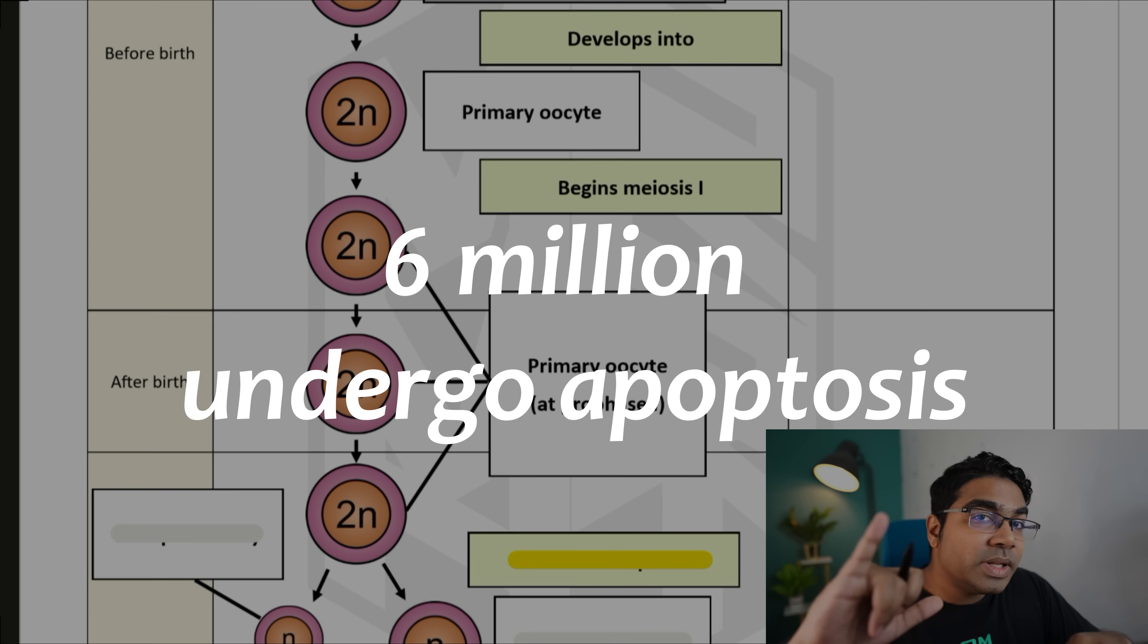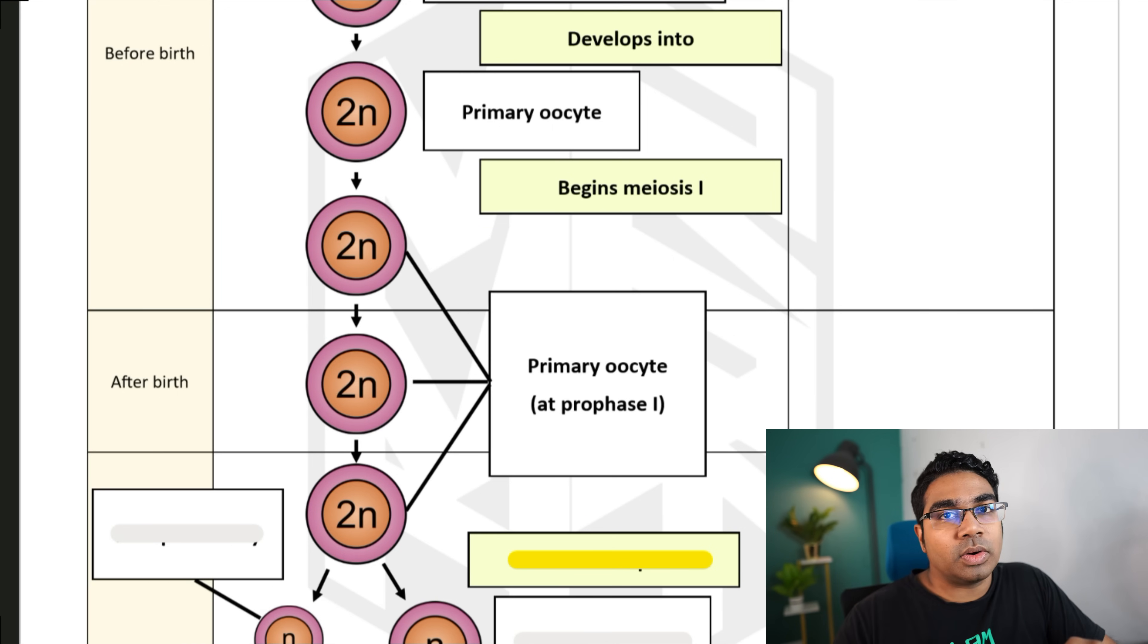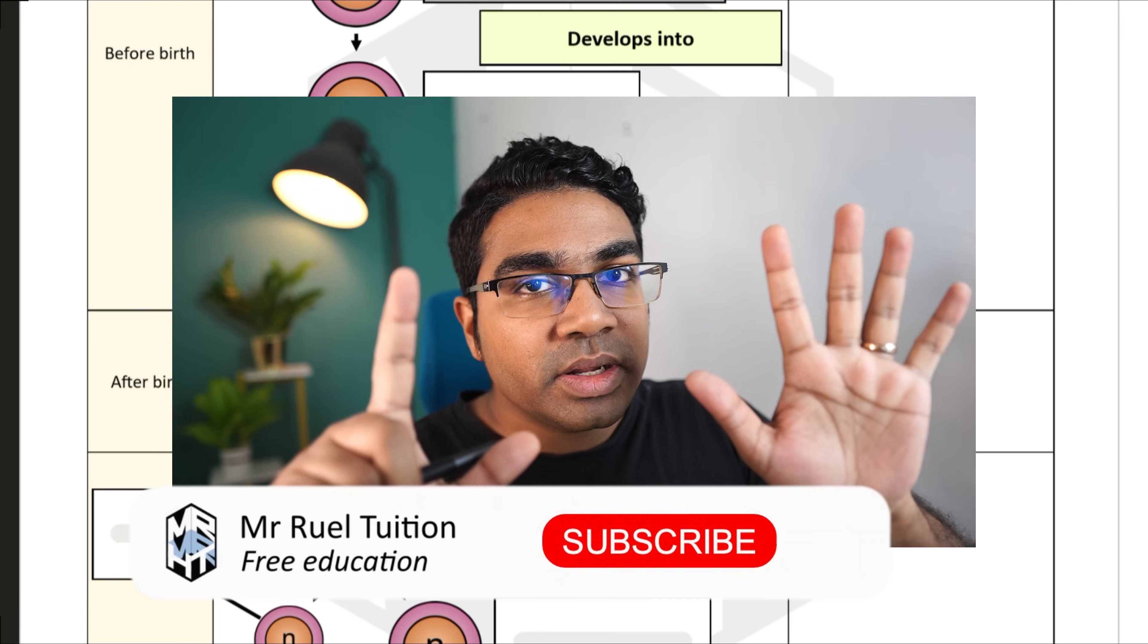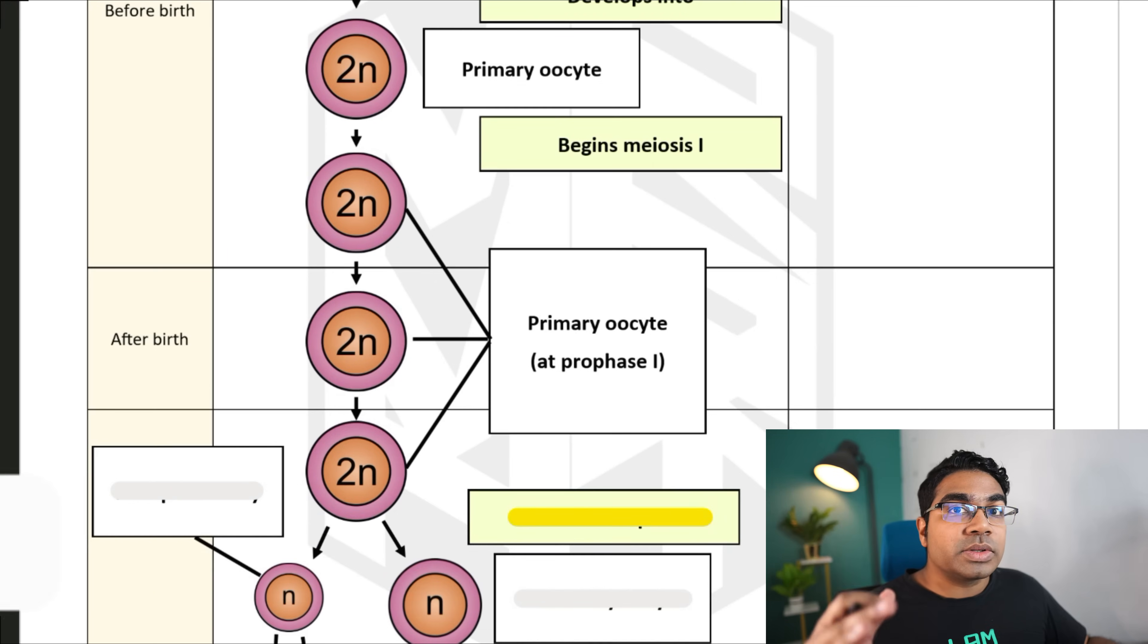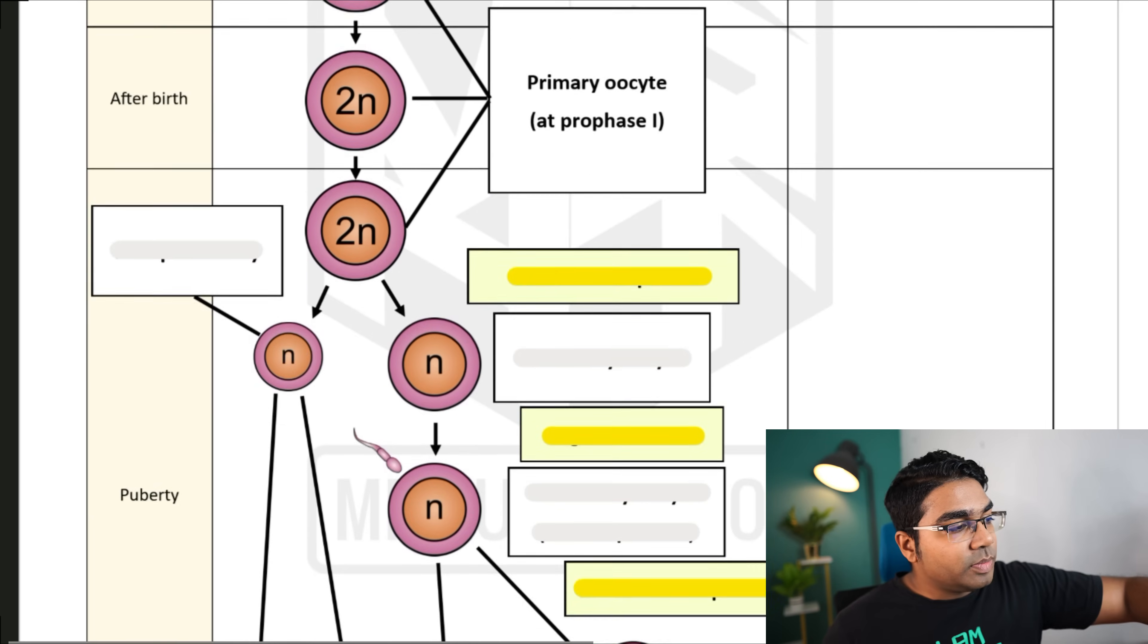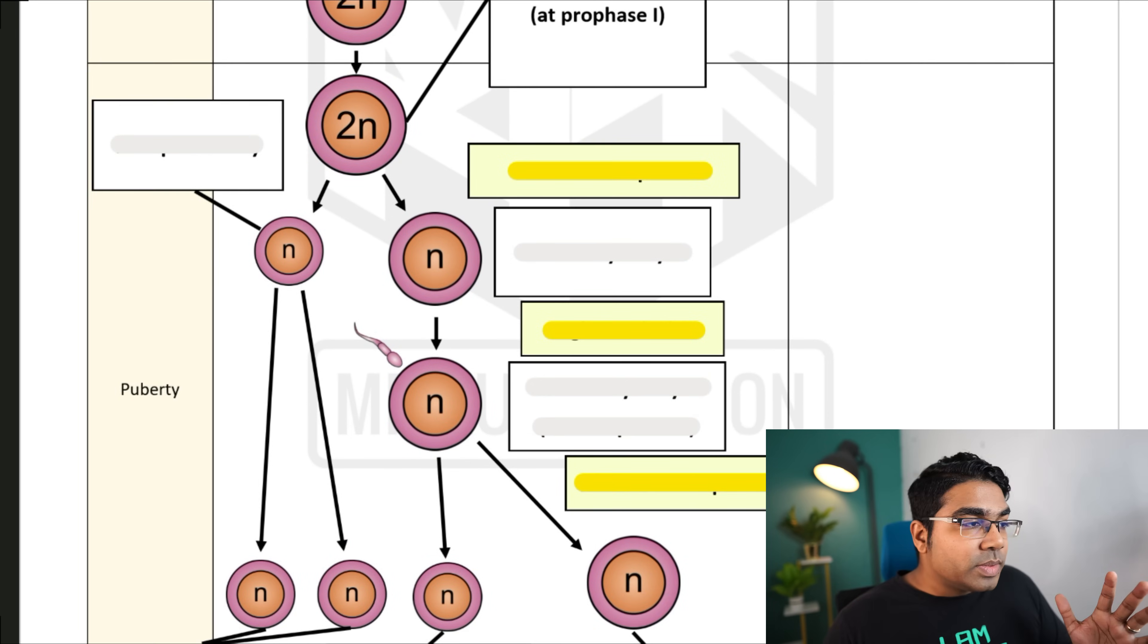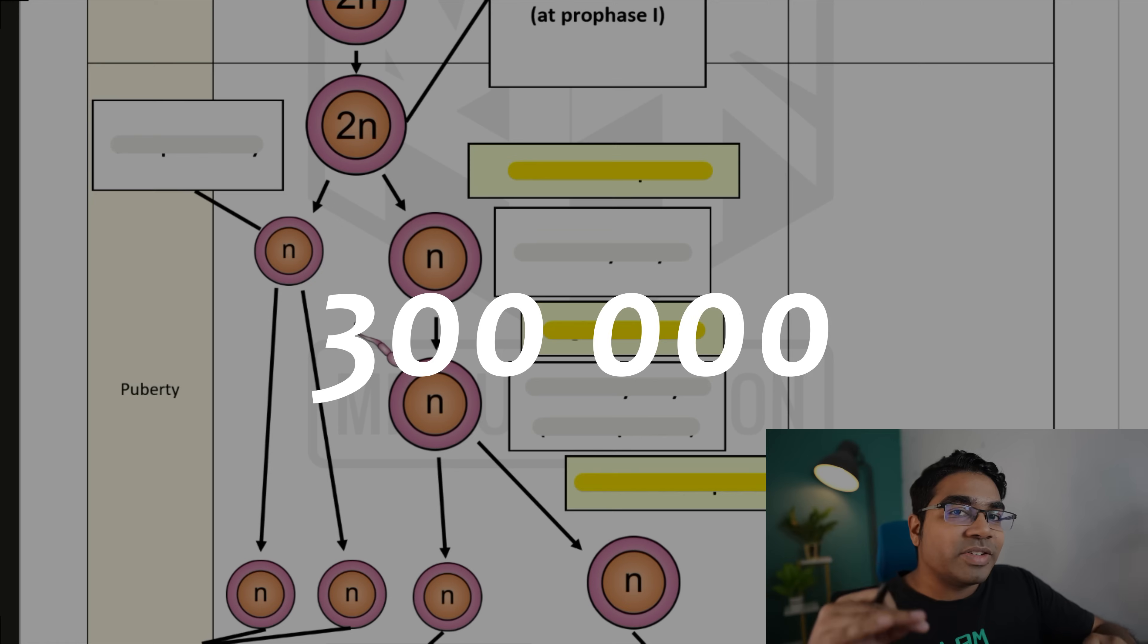After birth, about 6 million of these primary oocytes will undergo programmed cell death or apoptosis. So from the 7 million, we now have 1 million primary oocytes remaining. These primary oocytes will continue to die until the female reaches puberty. At puberty, primary oocytes will reduce to about 300,000, and all are still at prophase 1.